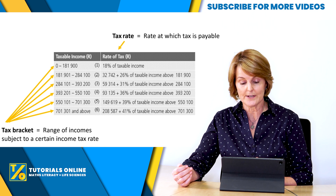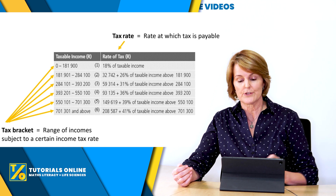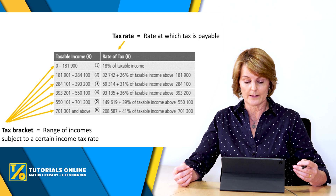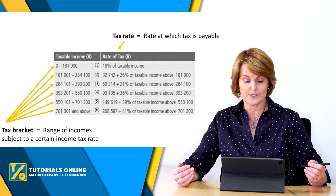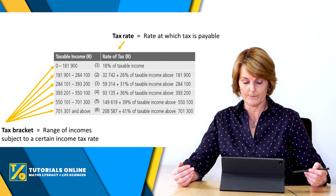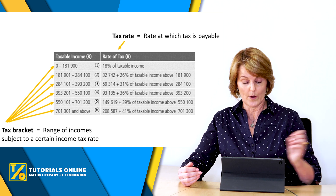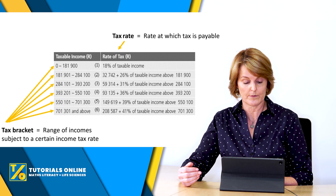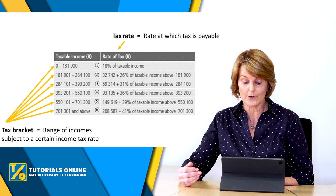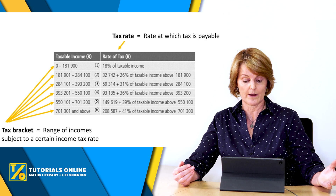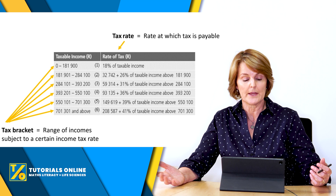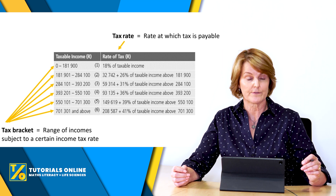On the right-hand column it says 'rate of tax' — that is the rate at which tax is payable. At the first bracket at the top, you only have to pay 18% of your taxable income, whereas at the bottom, if you're earning 701,301 rand or more, then you have to pay an amount of 208,587 plus all of that other money mentioned in that formula. So that is the rate of tax.